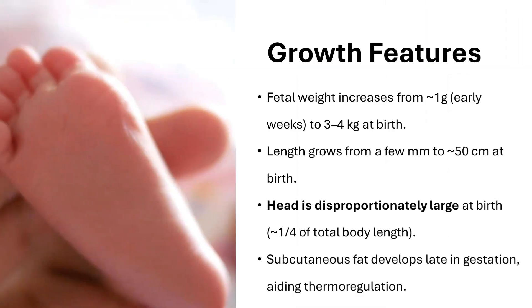Growth features of the prenatal phase: fetal weight increases from 1g in early weeks to 3–4 kilograms at birth; length grows from a few mm to 50 cm at birth; the head is disproportionately large at birth, comprising one-fourth of total body length; subcutaneous fat develops late in gestation, aiding thermoregulation.